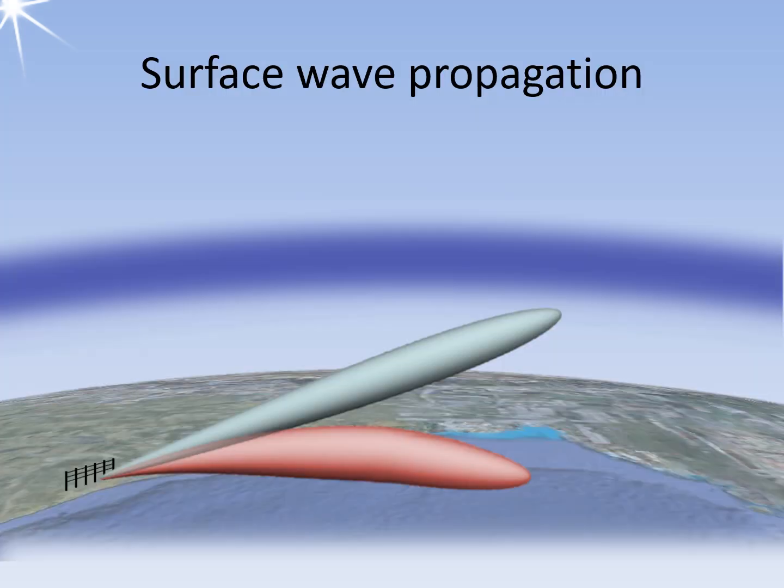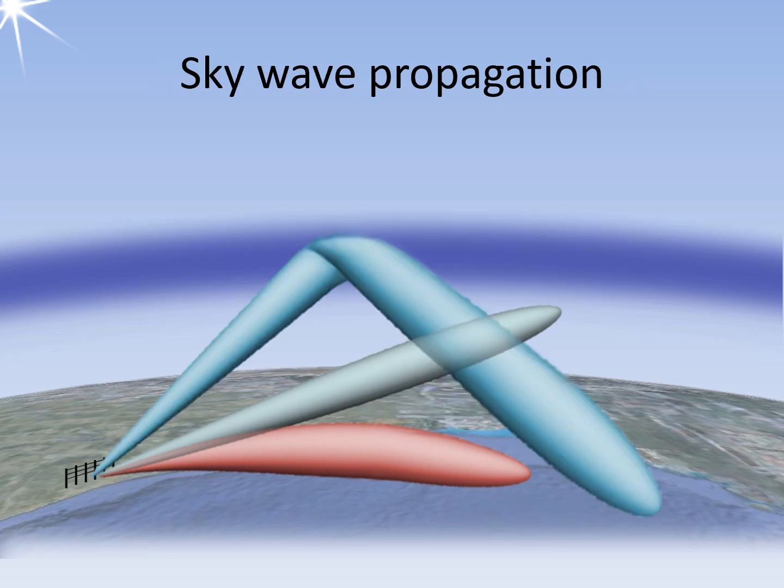Very low frequencies below about 5 MHz propagate as a surface wave, following directly along the earth's surface. This effect is tied to the low transmission frequency and is independent of the weather. However, very large transmission powers are required because many small obstacles attenuate the signal. A sky wave can occur above 5 MHz, where electromagnetic waves are reflected by the F layers in the ionosphere. However, above 27 MHz, this reflection happens only sporadically.